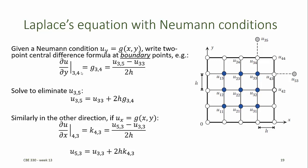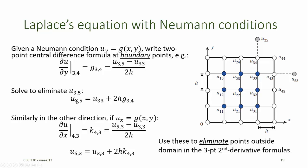We simply write a central difference formula for the first derivative centered at the point on the boundary of the domain, and we set that equal to our known Neumann condition. Then we solve for the value of the exterior point. We can similarly write the central difference formula for the derivative in the x-direction, again setting those equal to the Neumann condition to solve for the value of the unknown exterior point in terms of the boundary condition and the adjacent interior point. These formulas for the unknown values outside the domain can then be used to eliminate points outside of the domain in our finite difference equations for the points on the boundary.